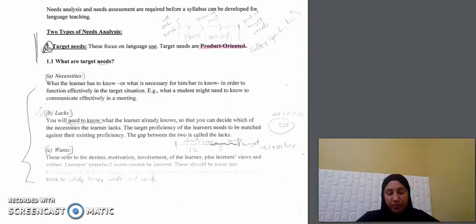Number three: wants. This refers to the desire, motivation, involvement of the learner, plus the learner's views and wishes. And also, learners' perceived wants cannot be ignored. This should be taken into consideration. So that means what the learner wants to learn, his desire, his motivation, and his involvement.